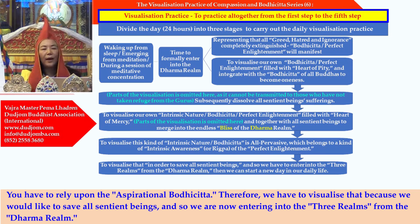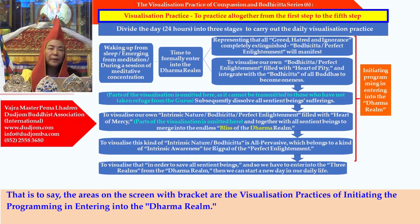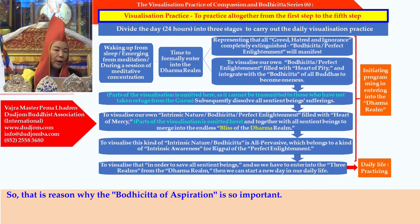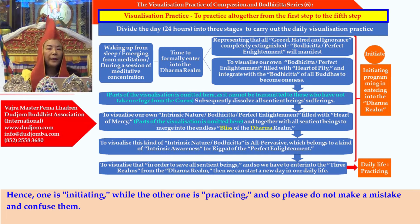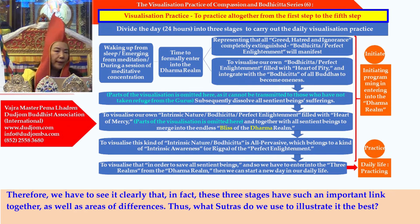Therefore, we have to visualize that because we would like to save all sentient beings, we are now entering into the three realms from the Dharma realm. In this way, we can start off with all of our daily living. This is to teach you how to make the transit — the areas on the screen with brackets are the visualization practices of initiating the programming in entering into the Dharma realm, and the last visualization belongs to the visualization practice of daily life. This is what we have to do when we make the transit from the oneness state to the dualistic state. That is why the bodhicitta of aspiration is so important.